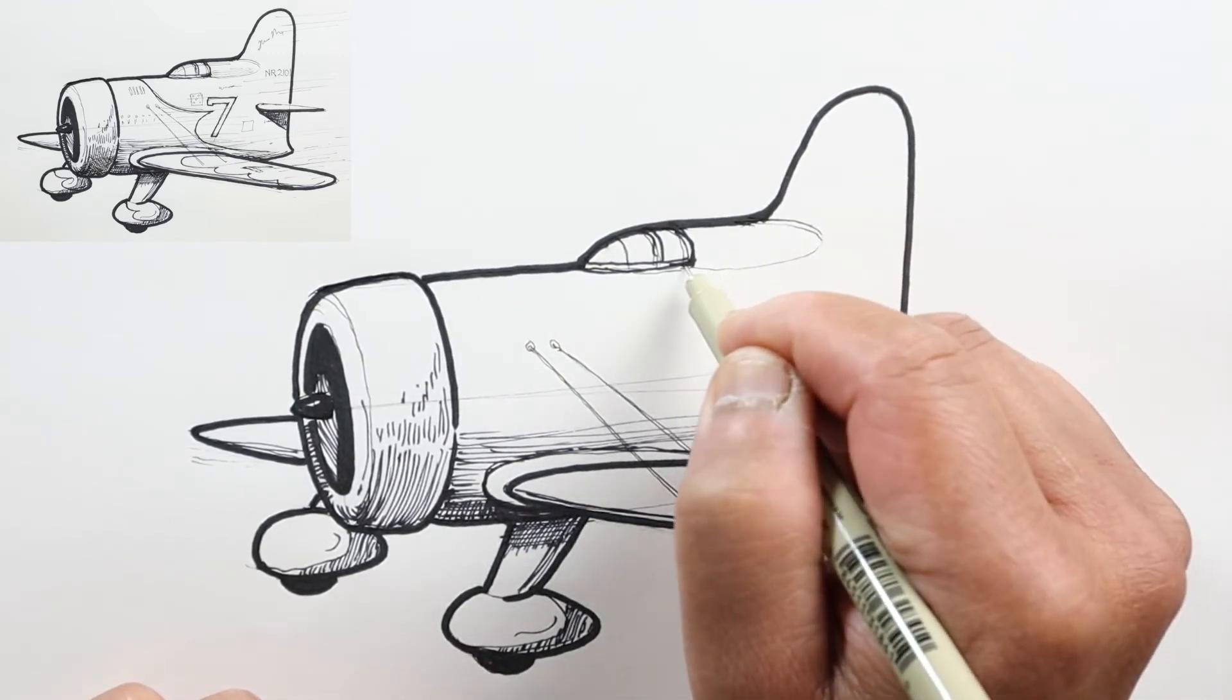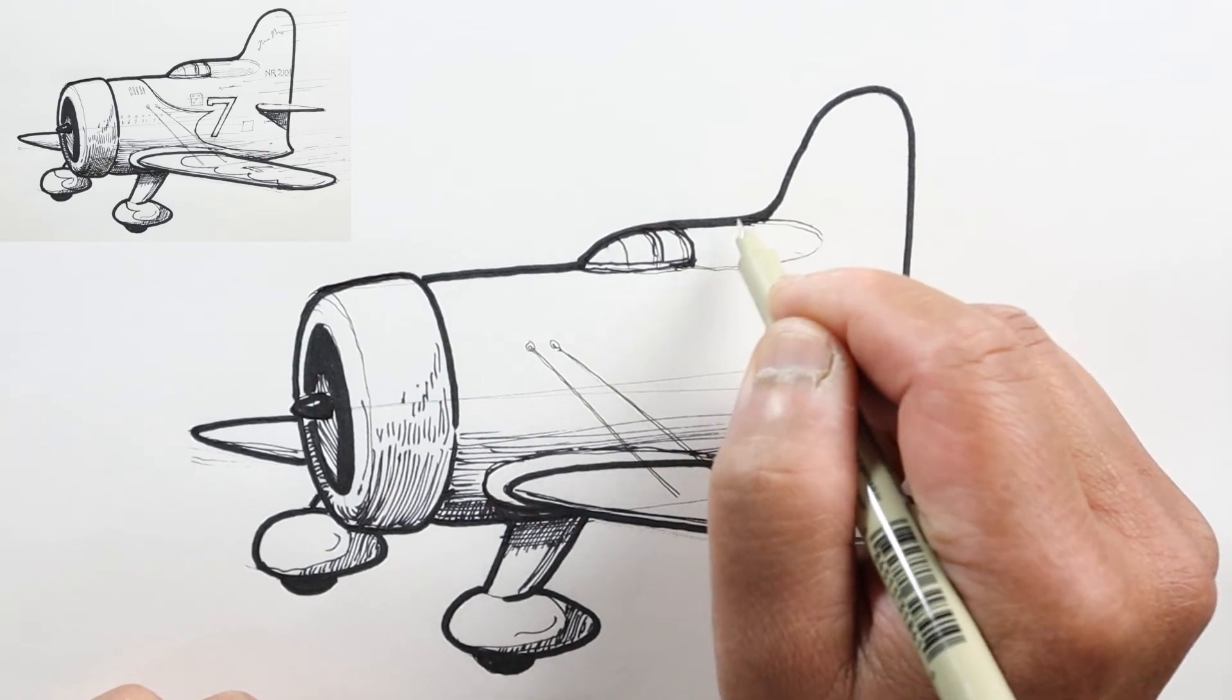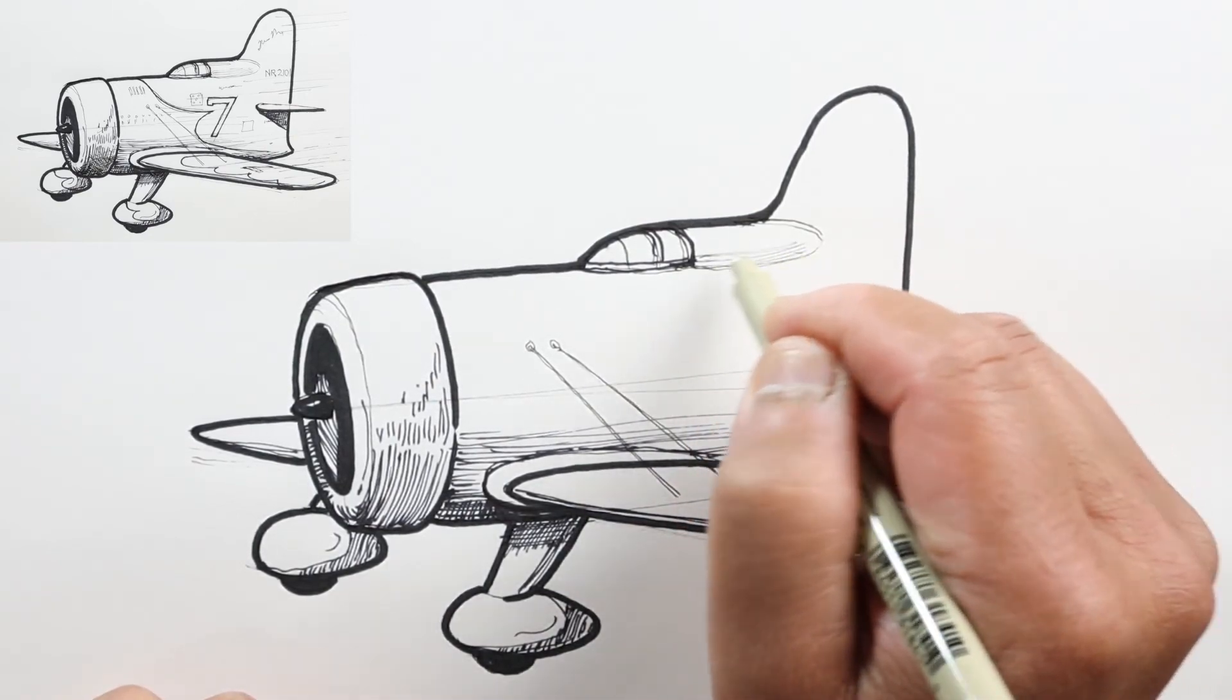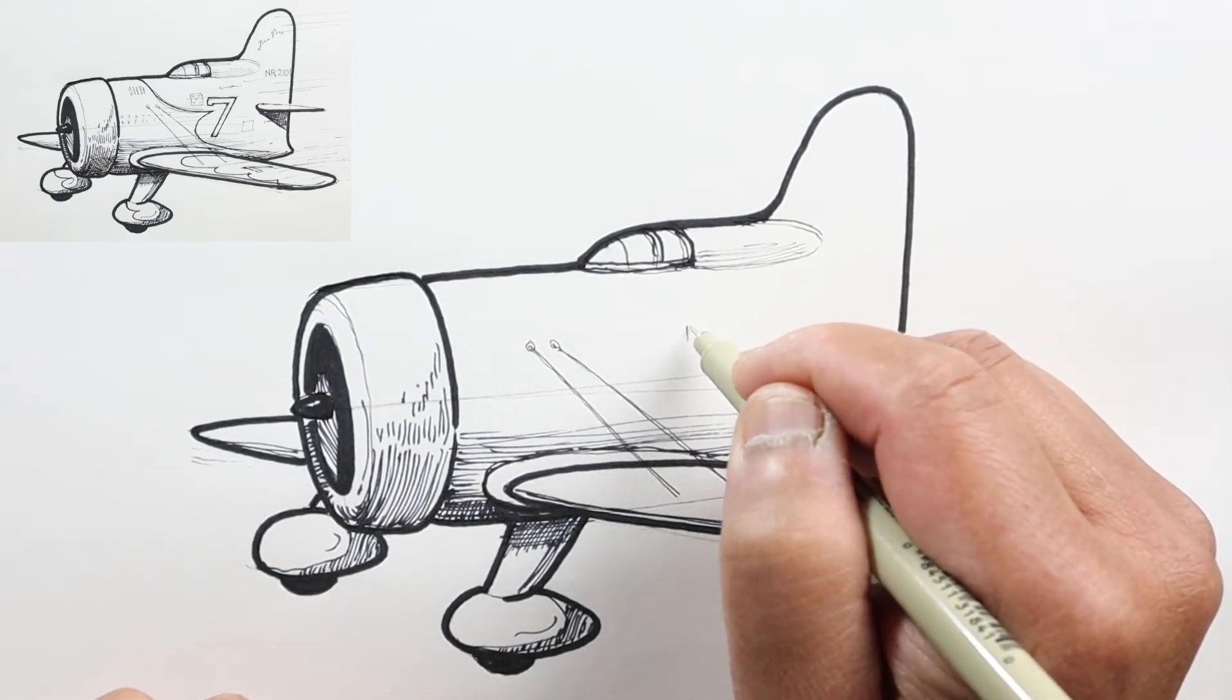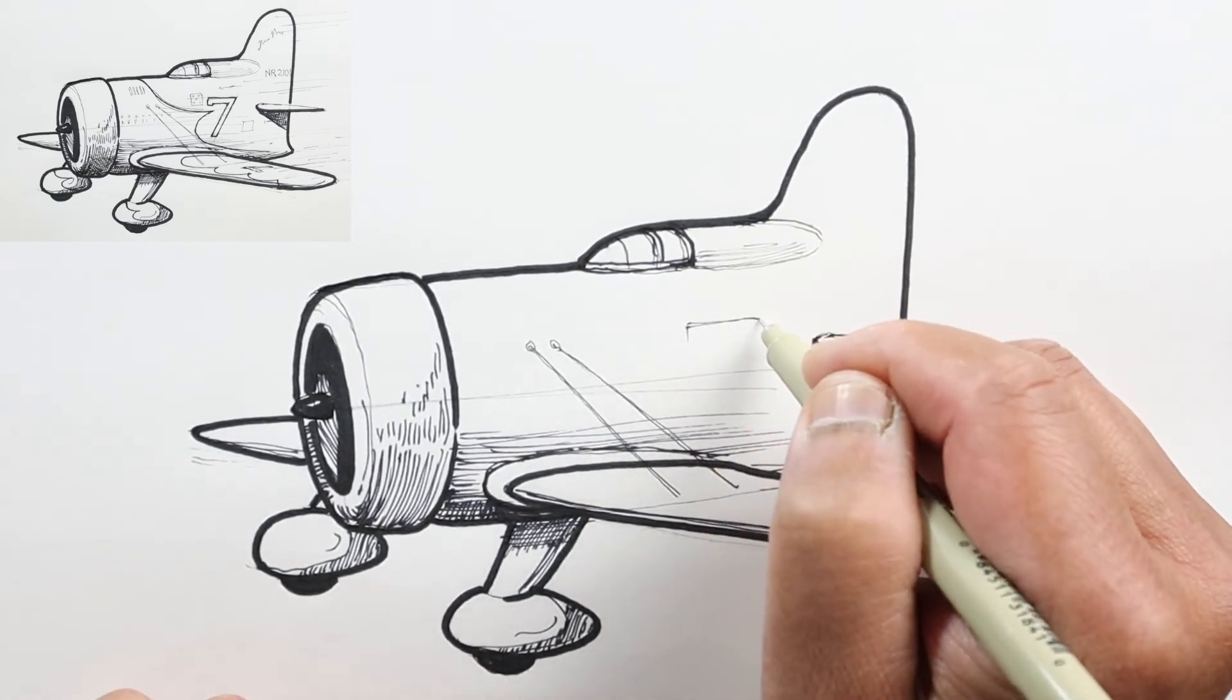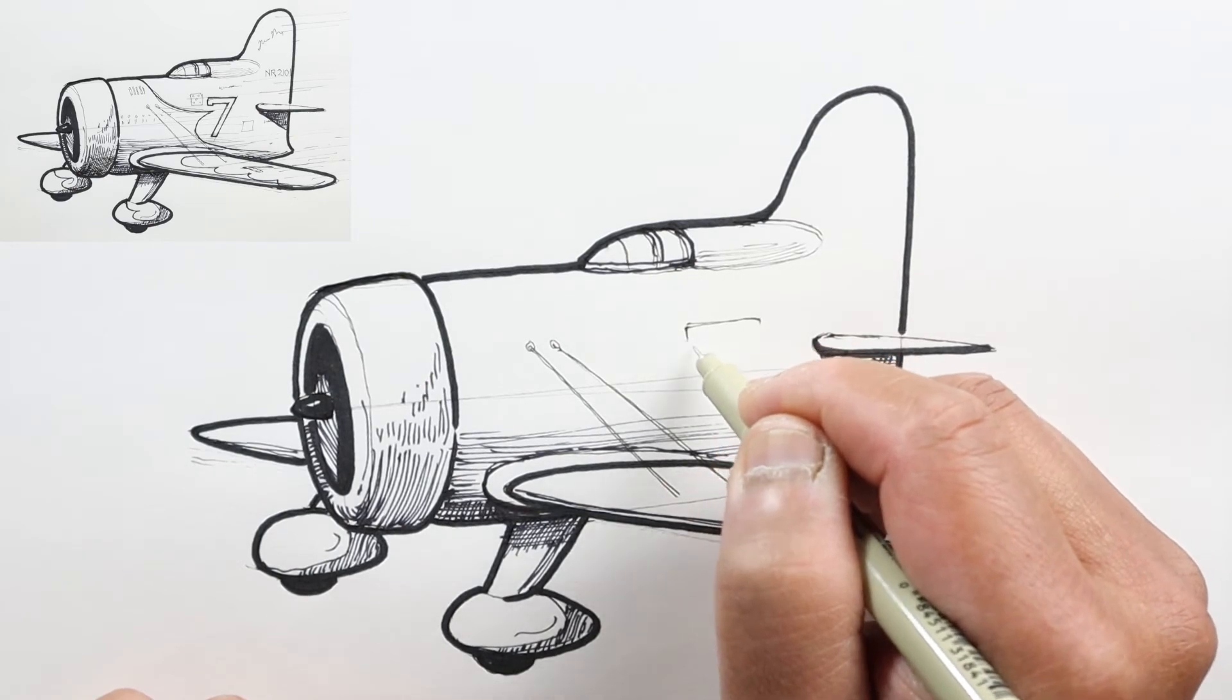This canopy is kind of rounded over here, so I'm just going to add some shadow lines here. These things were used for racing, I think, so I'm going to put a number seven here.